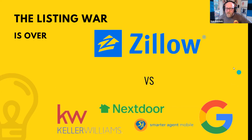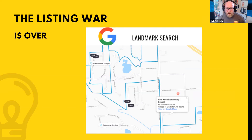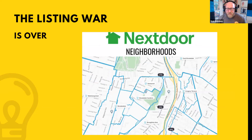We've also partnered with Google to integrate Yelp, Google Directions, and Google Maps on our websites. One fun feature is landmark search — you can type in a coffee shop, shopping mall, elementary school, or your job and it takes you right to that location, showing what's for sale around it. You cannot do that on Zillow or Realtor.com. Here's how neighborhoods appear on the website — blue boundary lines on the map, each with their own market data.